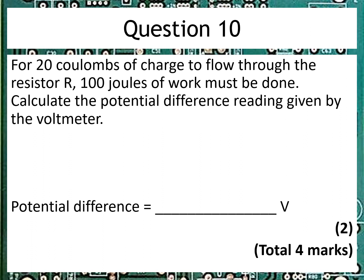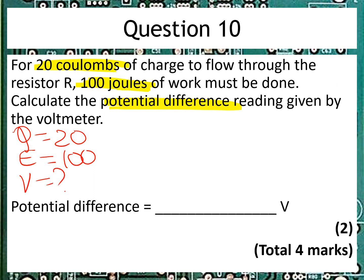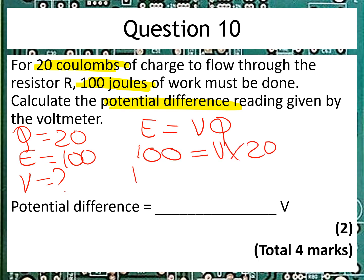We're given 20 Coulombs of charge from the last part and 100 joules of work — don't be put off by the word 'work', it's an old-fashioned term for energy. We're asked to find the potential difference, which is another name for voltage. So Q equals 20 and E equals 100, and we're asked for V. Using E equals VQ: 100 is equal to V multiplied by 20. So 100 divided by 20 gives us 5 volts, and the units are already given.